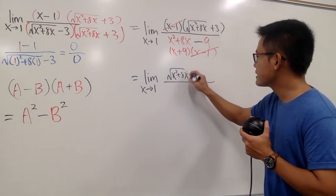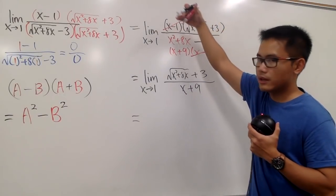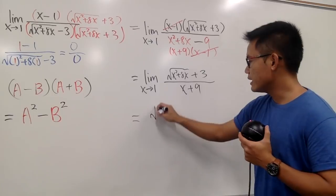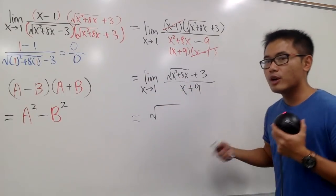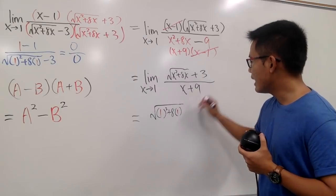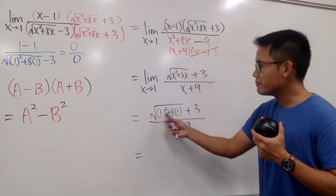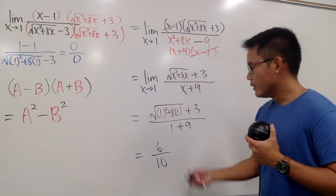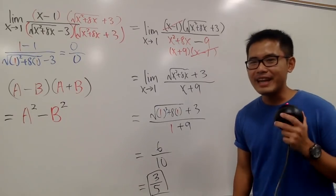Now plug in 1: on the top, 1 squared plus 8 times 1 is 9, square root of 9 is 3, and 3 plus 3 is 6. On the bottom, 1 plus 9 is 10. So we get 6 over 10, which simplifies to 3 over 5. That's the answer.